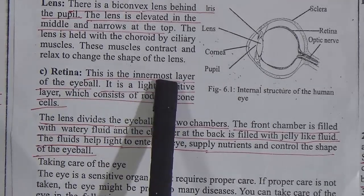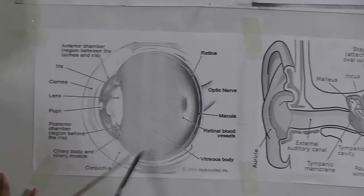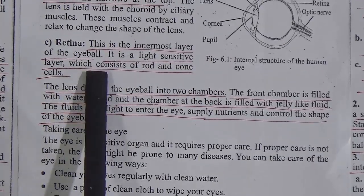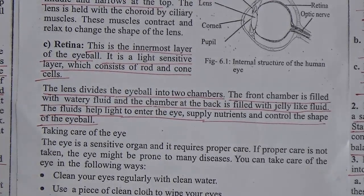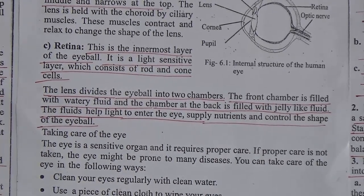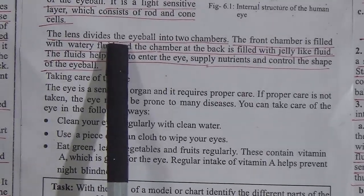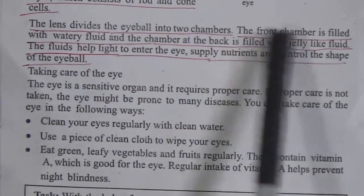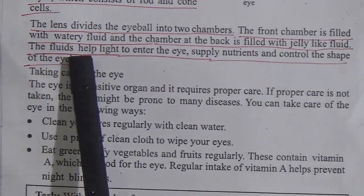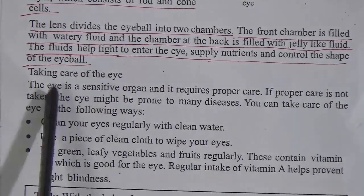Retina: this is the innermost layer of the eyeball. It is a light-sensitive layer which consists of rod cells and cone cells — two different types of cells found only in the eyes. The lens divides the eyeball into two chambers: the front chamber is filled with watery fluid and the back chamber is filled with jelly-like fluid. This fluid helps light enter the eye, supplies nutrition, and controls the shape of the eyeball.